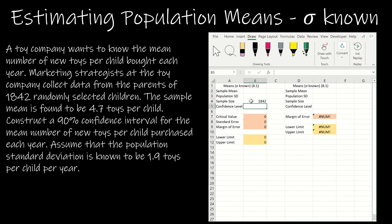The sample mean is found to be 4.7 toys per child. So I'm going to enter 4.7 as our sample mean. Construct a 90% confidence interval. So 0.9. We don't use 90. We use 0.9. Assume the population standard deviation is known to be 1.9.